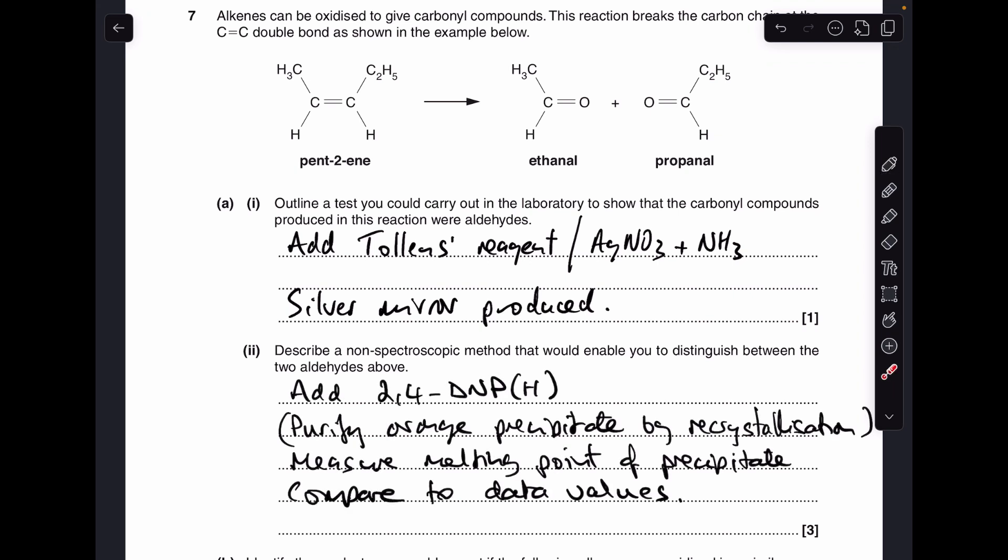Next part, this non-spectroscopic method that enables you to tell what the aldehydes are. So you would add 2,4-DNP, or you could say 2,4-DNPH, 2,4-dinitrophenylhydrazine.